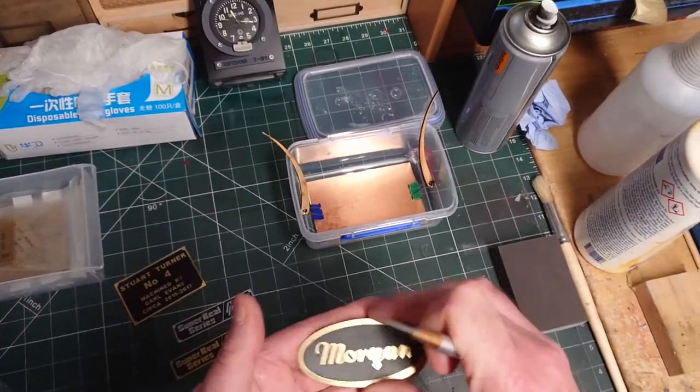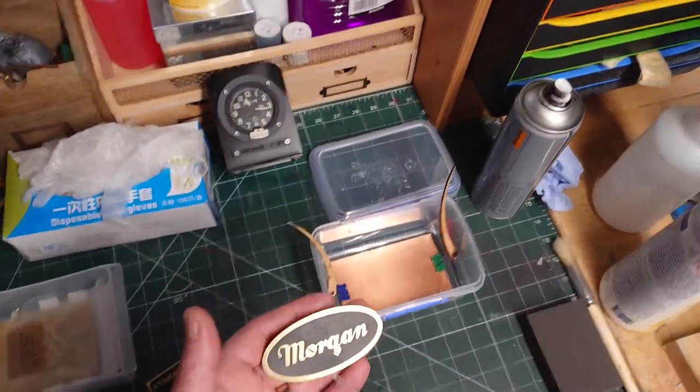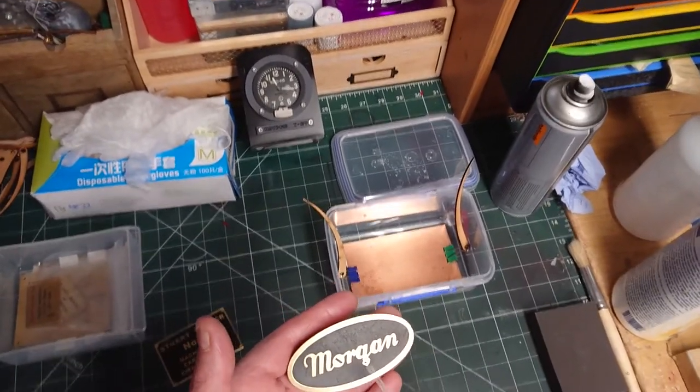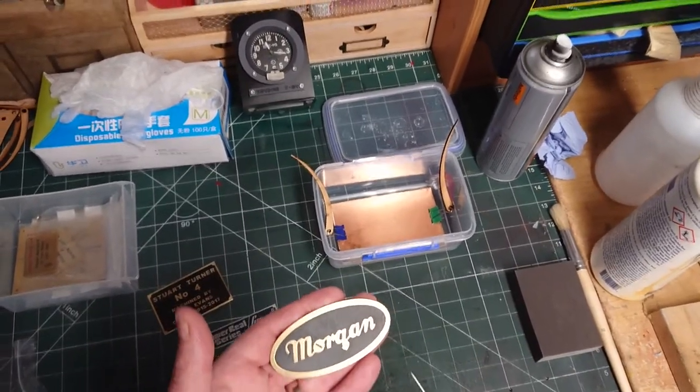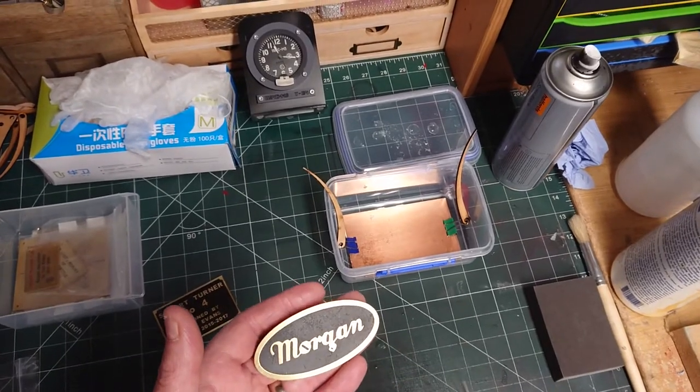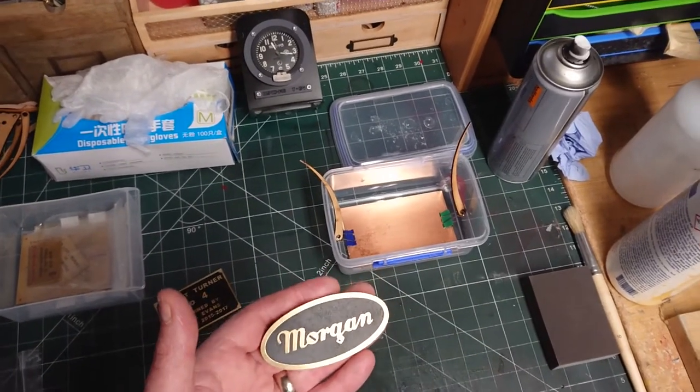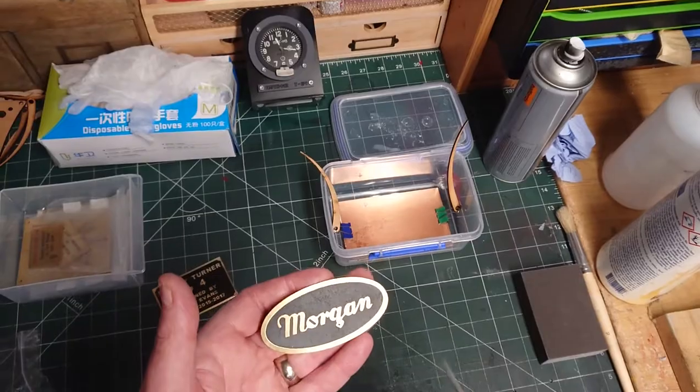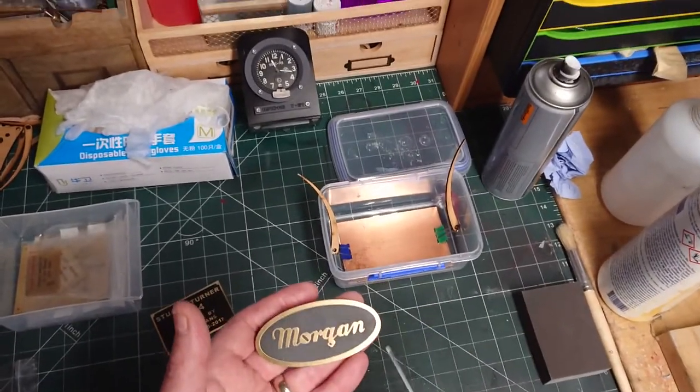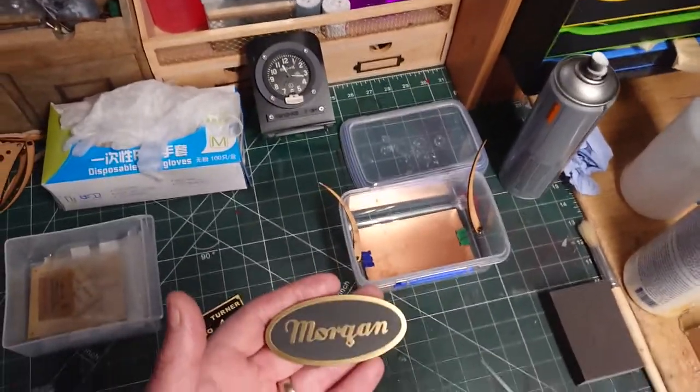So the basic theory is you remove a barrier between the acid and the part you want etching. What it entails is covering the whole area with a barrier to start off with and then removing that so the acid can eat into it.